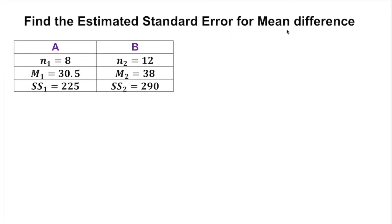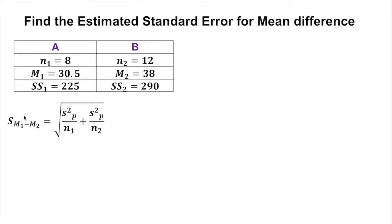We are finding the underestimated standard error for the mean difference. For a true group, group, sample size, sample mean, and sum of squares are given. The formula uses the full variance under a square root: full variance over sample size one (which is 8) plus full variance over sample size two (which is 12), because we assume equal variances for a true group.